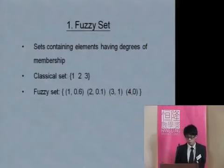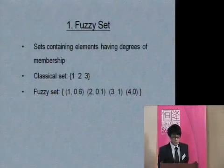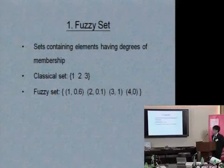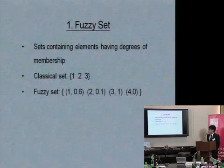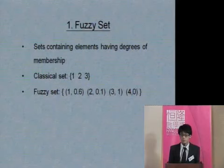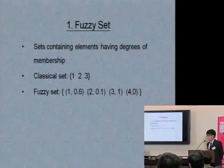First, we say something about fuzzy. A fuzzy set is a set specifically designed to deal with objects with uncertainty membership. It is a set containing elements having some degree of membership. From a classical set, sometimes an element surely belongs to a set. But sometimes we can't say so certainly, so we introduce a fuzzy set and assign a grade of membership — for example, 0.6 to element 1 — meaning it probably belongs to this set, but not 100% sure.